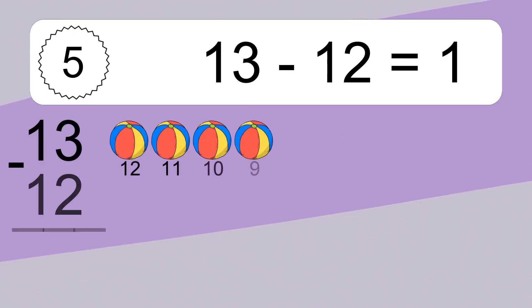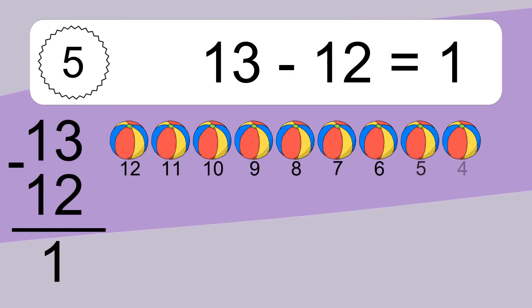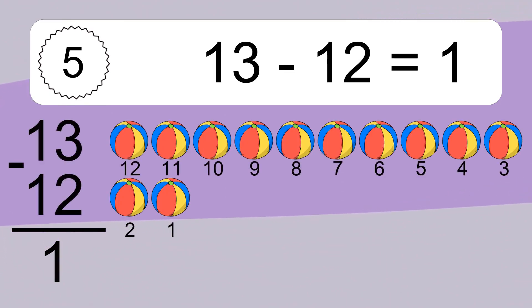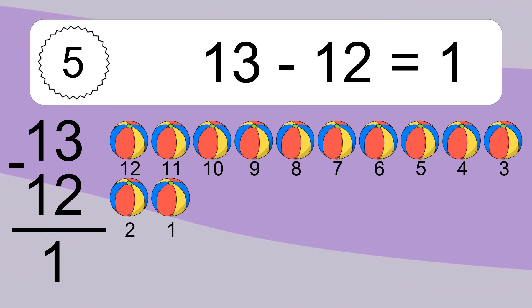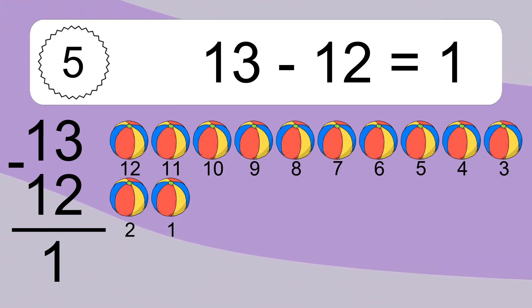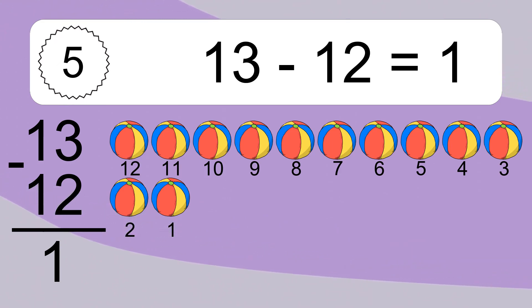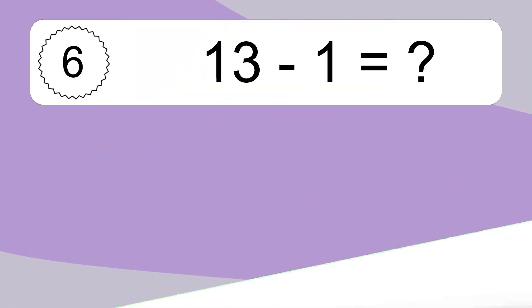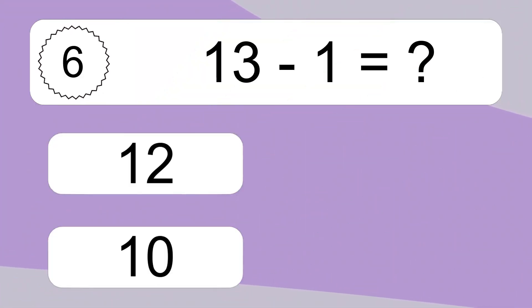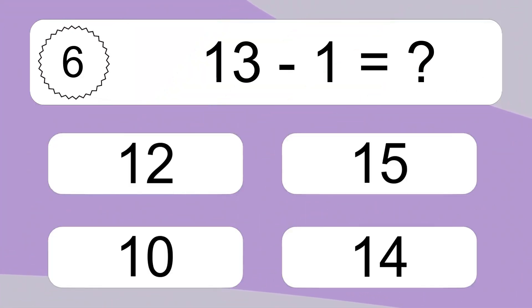13 minus 12 equals what? 13 minus 12 equals 1. Let's count it: 12, 11, 10, 9, 8, 7, 6, 5, 4, 3, 2, 1.